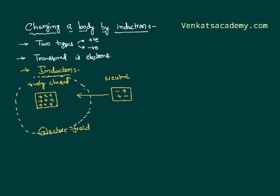Now I started moving this neutral body into this electric field. What happens when the neutral body enters the electric field? The initial body is full of positive charges, so it starts polarizing the charges inside the neutral body — the positive charge pulls the negative charges of the other body towards it and pushes the positive charges of the other body away from it. Thus, charge separation happens in this neutral body. This is called charge polarization or separation of charges. Now, near the positive charge there is a negative charge between them, and attraction develops, meaning this neutral body is now behaving like a charged body itself.